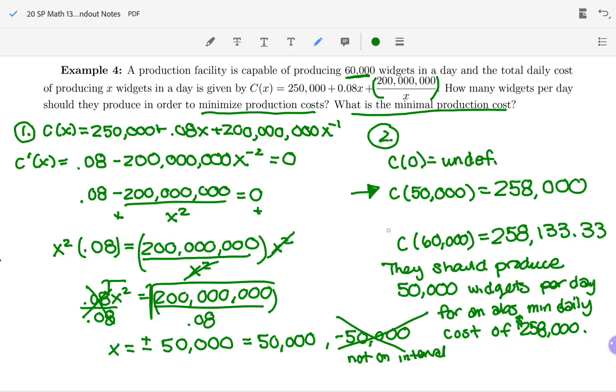So notice if we plugged in zero wrong, you might be tricked. Like if you thought it was just going to be 250,000, you might be tricked into thinking they should produce zero. So be super careful when you're plugging back in. If something's undefined, make sure you write it as undefined.